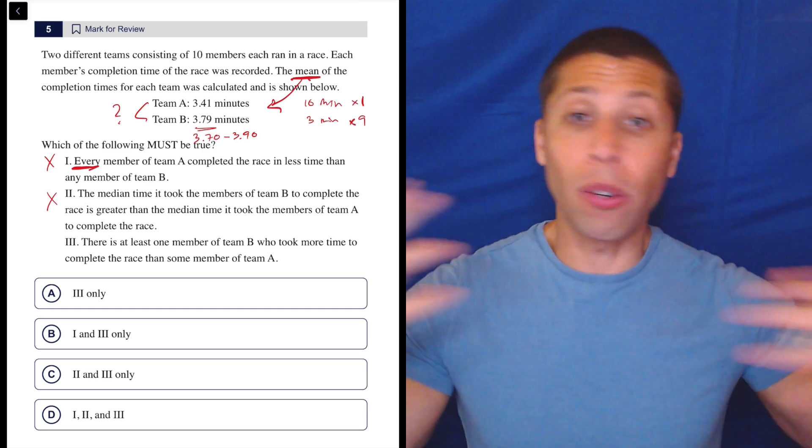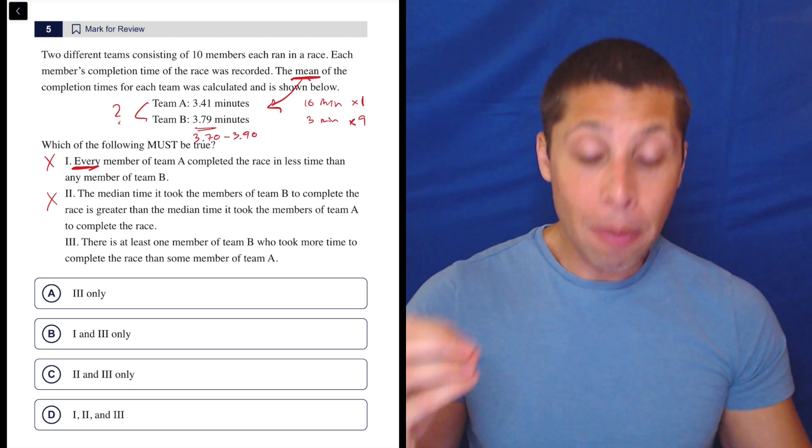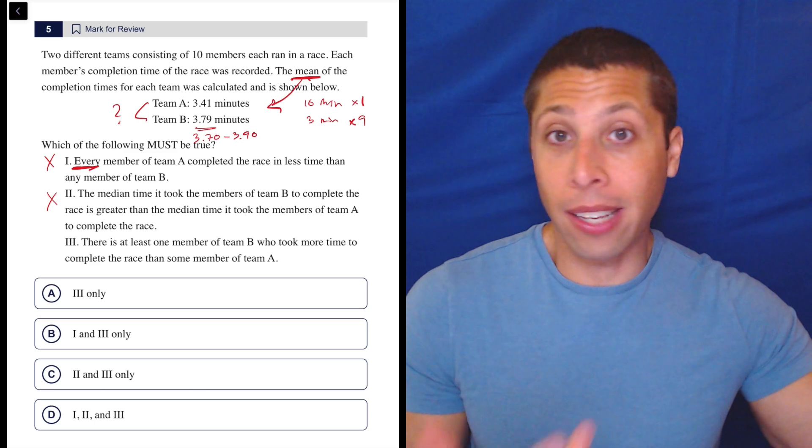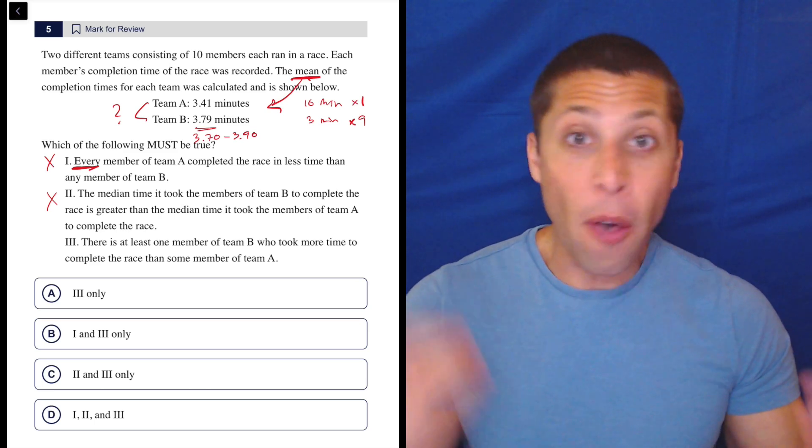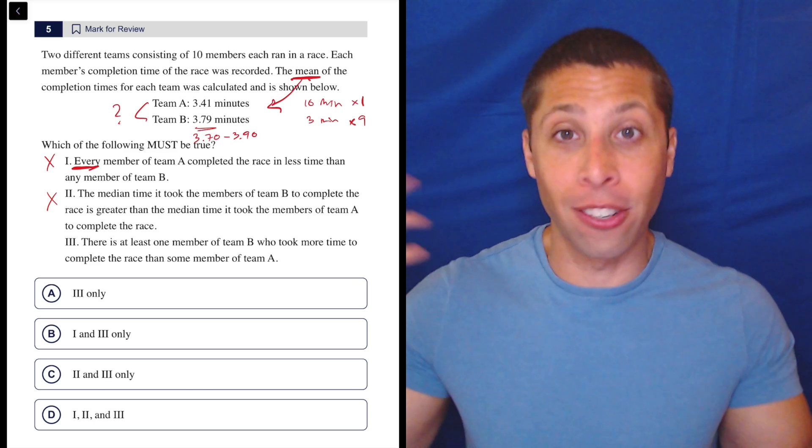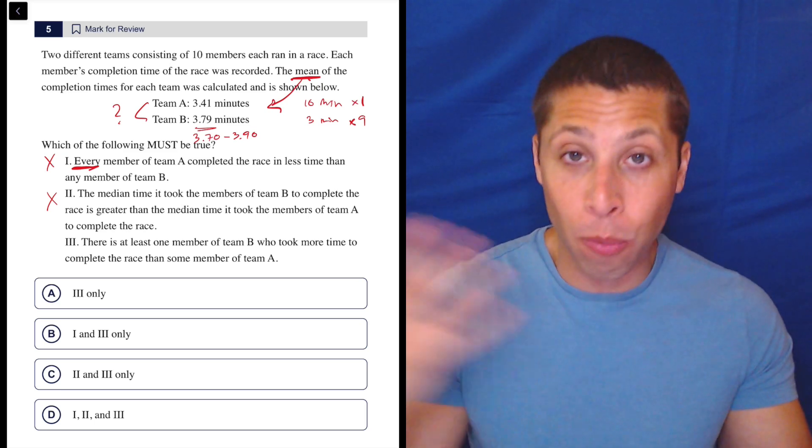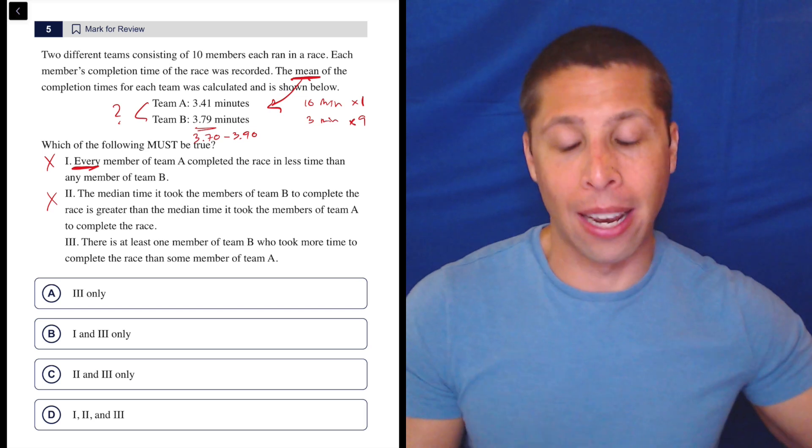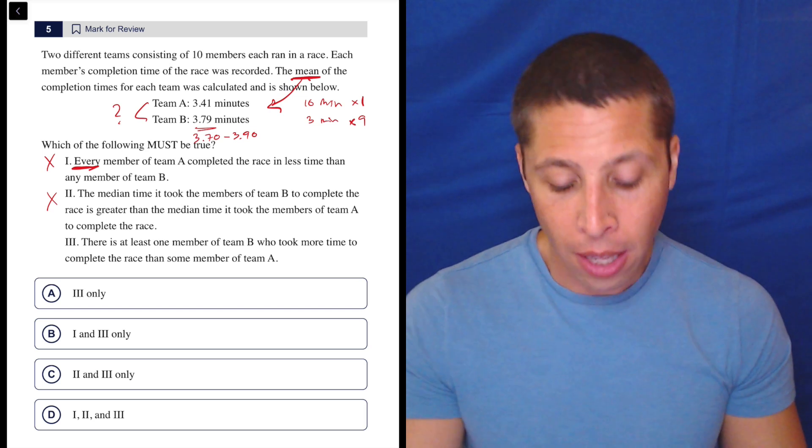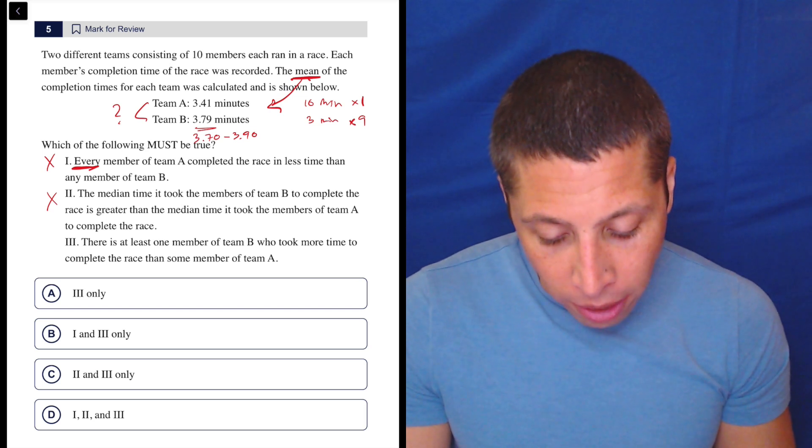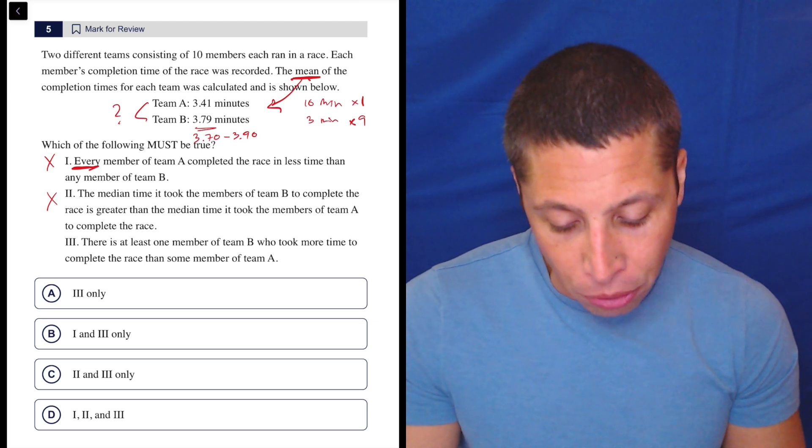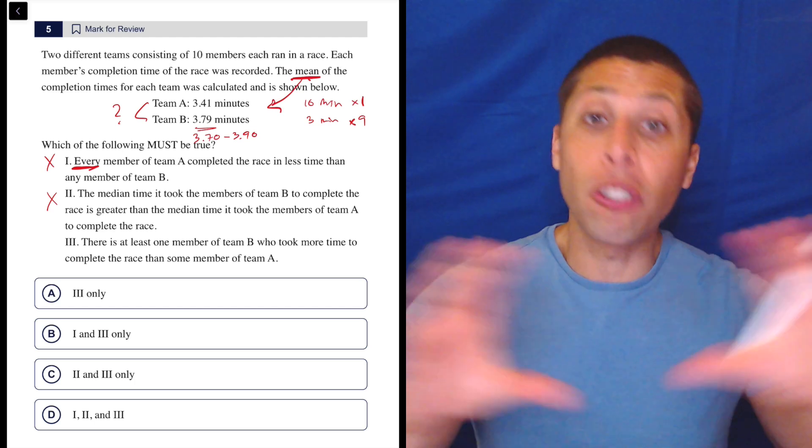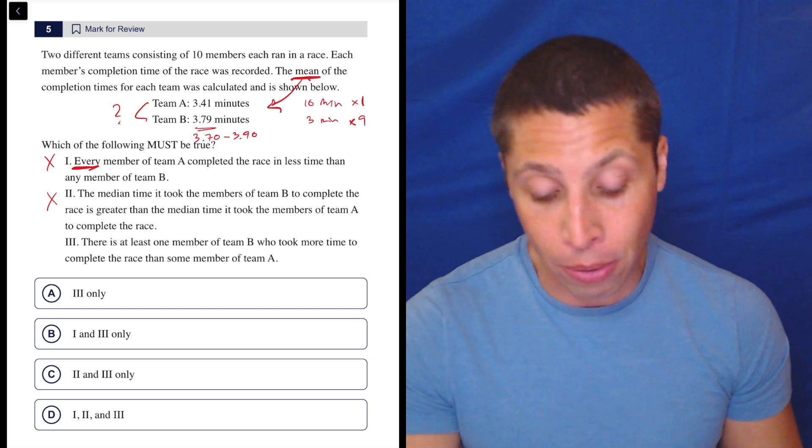We don't know that distribution. We don't know if there are some outliers or things like that. Maybe Team B is actually really slow with a bunch of seven-minute people, but then there's one person who literally is like the flash and just got there in a split second, and that one person brought the average down. But then the median value would still be along the slower end because median is an absolute middle. We're not able to make any confident statement about the distribution of the A racers versus the B racers.